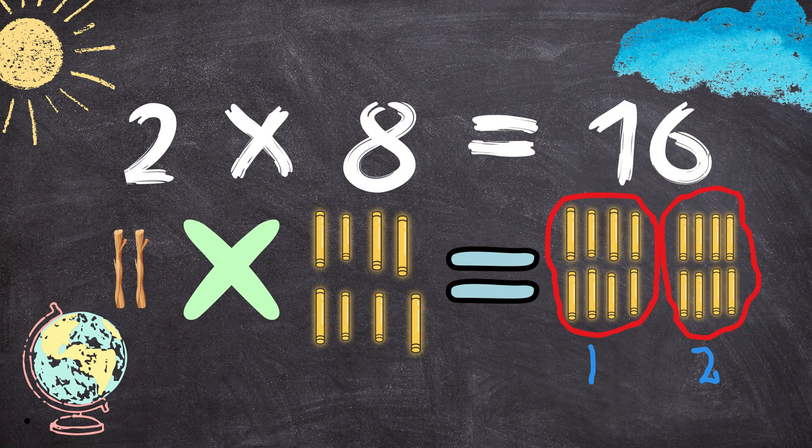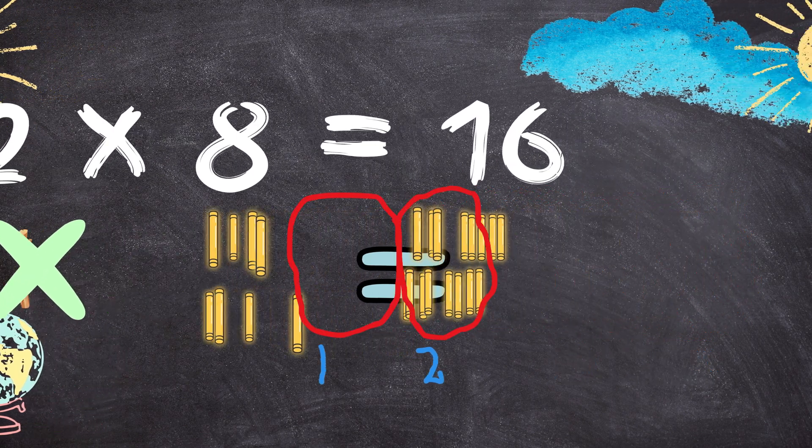Two times eight equals sixteen. Two sticks multiplied by eight sticks will give you one, two, three, four, five, six, seven, eight, nine, ten, eleven, twelve, thirteen, fourteen, fifteen, sixteen sticks.